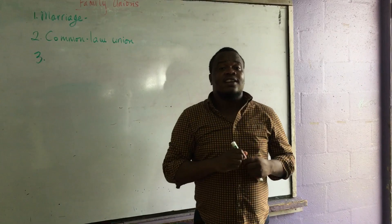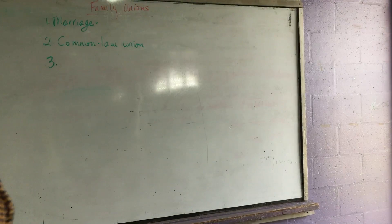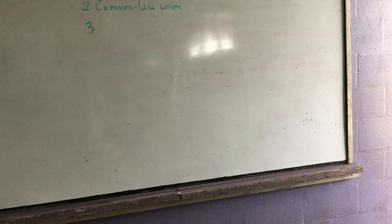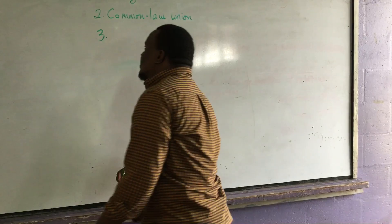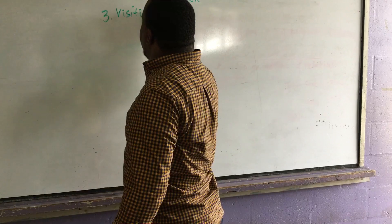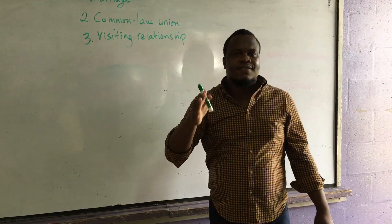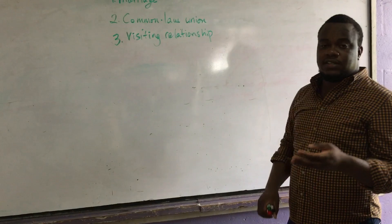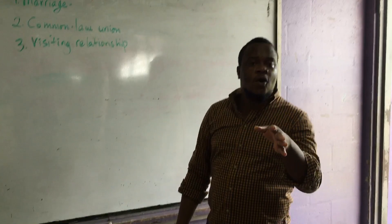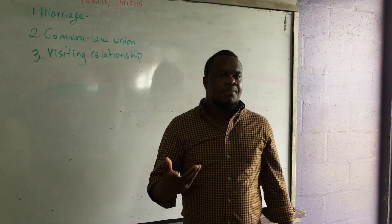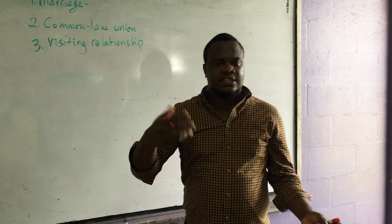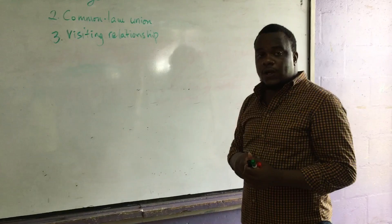The next family union is not so popular; however, it exists, especially among young couples that are not yet ready to live together. The next family union is the visiting relationship. This is when a man and a woman are in a relationship; however, they are not living together, but they visit each other. The man usually visits the woman to satisfy sexual needs and also give her money or money for the children. It can work vice versa too. So, those are the three types of family unions.